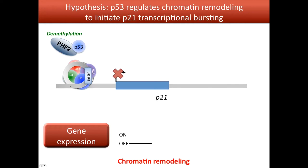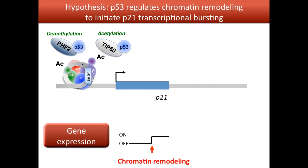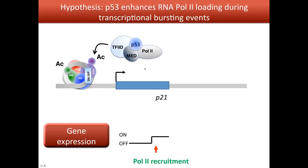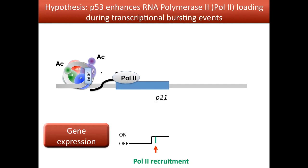That could lead to the transition from the off state to the on state, but there is still need for one more step. We know that p53 can also bind to acetylase enzymes such as TIP60, which could aid the recruitment of TIP60 to the nucleosome and acetylation of the histone. When histones are acetylated, chromatin is usually more in an open state, which helps recruit RNA Pol II. We also know that p53 can bind tightly to RNA Pol II, and this binding can help recruit RNA Pol II to the activated promoter to produce mRNA.